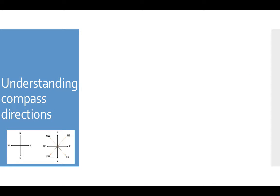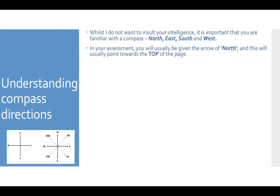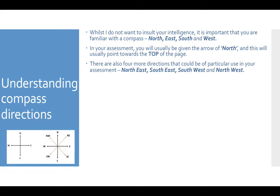So understanding compass directions. Whilst I do not want to insult your intelligence, it's important that you're familiar with a compass. So here we have north, south, east and west. In your assessment, you will usually be given the arrow of north, which will really help you out, and this will usually point towards the top of the page. There are also four more directions that could be of particular use in your assessment: northeast, southeast, southwest and northwest.